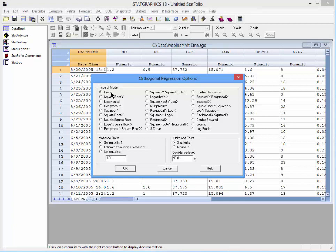I'll go ahead and fit the linear model. Based upon published studies of the Mount Etna data, I'm going to set the variance ratio equal to 1.51. I'll take the default Student's t distribution for my limits and tests.